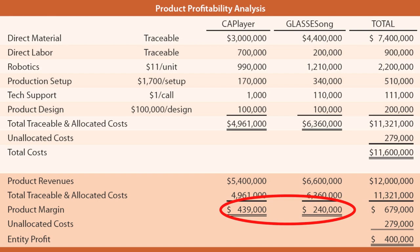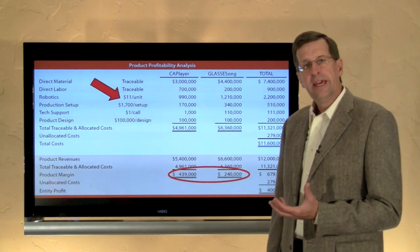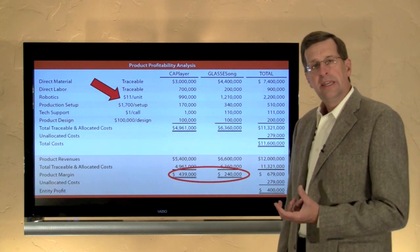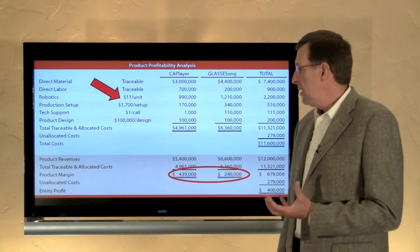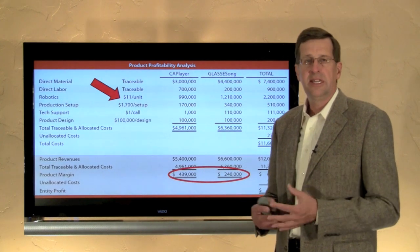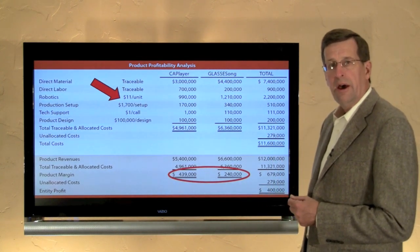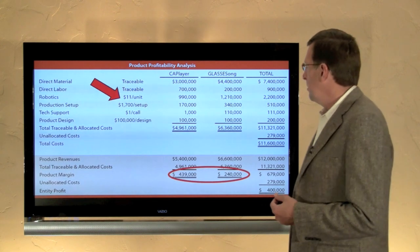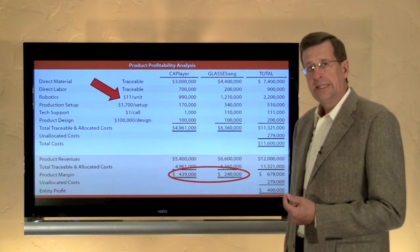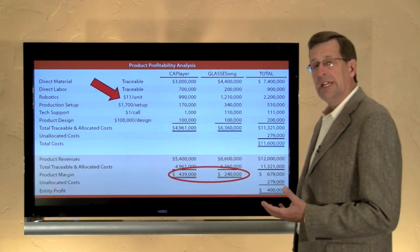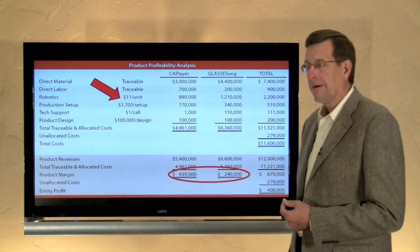After the full analysis, we conclude that Cap Player is actually more profitable than Glasses Song under activity-based costing. A thorough analysis of resources consumed by activities supporting each product revealed a very different view of the business. A key example: the tech support required for Glasses Song was far more costly than for Cap Player — something not visible under the traditional costing model that allocated overhead based on direct labor and treated all SG&A as a period expense.